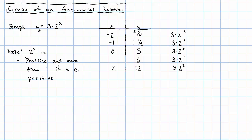Well, no. 2 to the x is positive and more than 1 if x is a positive number. Still positive, but a fraction less than 1 if x is negative. It's just 1 if x is 0. So 2 to the x is never 0 and never negative. Multiplying by 3 isn't going to make something 0 or negative. So in our example here, y is never 0 and never negative.